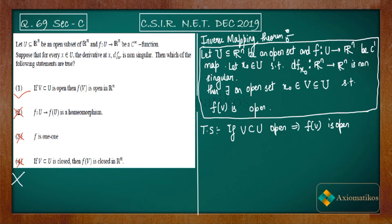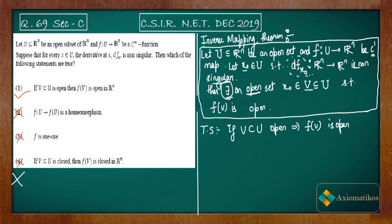The Inverse Mapping Theorem states: let U ⊂ ℝⁿ be open and f: U → ℝⁿ be a C¹ map. If at a point x₀ ∈ U, Df(x₀) is non-singular, then there exists an open set V ⊂ U such that f(V) is open. Note carefully: the theorem says there *exists* an open set, but our problem says *every* open set maps to an open set. So we need some tricks.